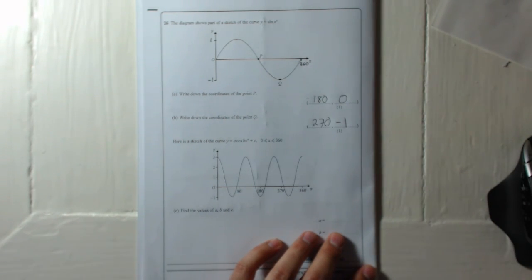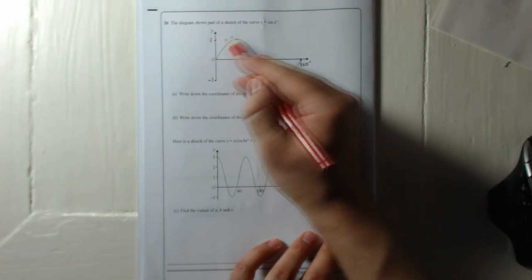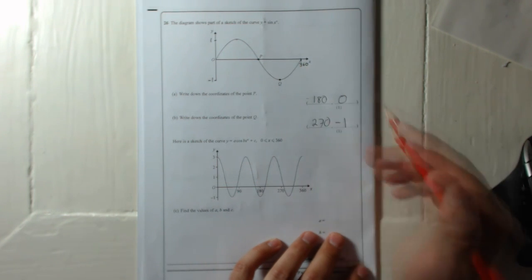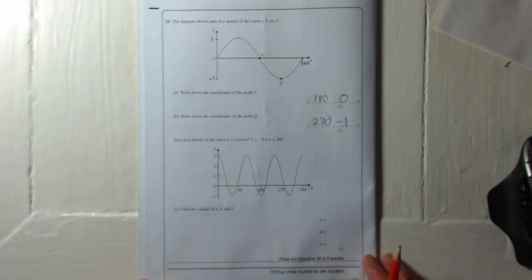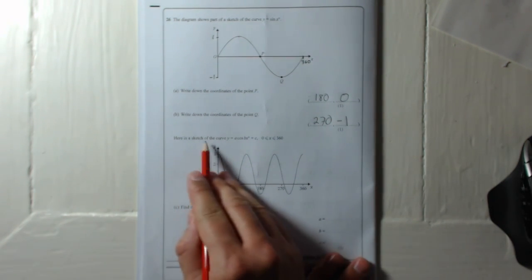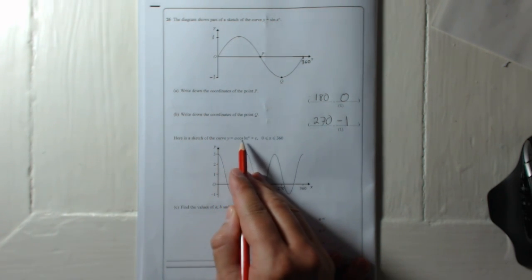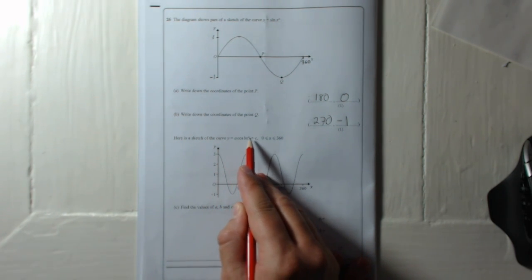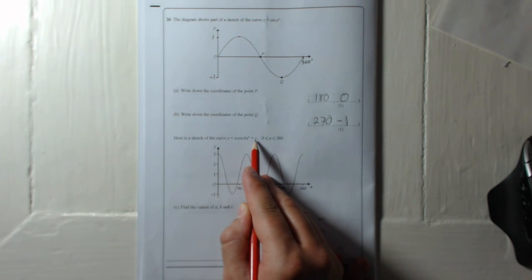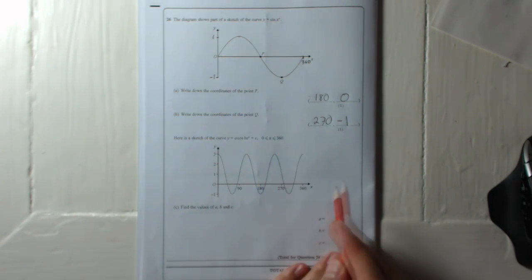And so it'll come back and do it again at 720, which is double 360, and it'll carry on forever, always reaching a high of 1 and a low of minus 1 and always having this length of 360. So that's part B.